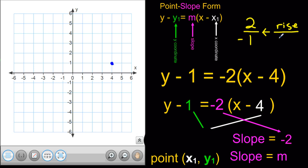So, we rise 2, and we run negative 1. Now, any time your rise is positive, like this 2 up here, that tells us to go up 2. If it were negative, then I would go down 2.